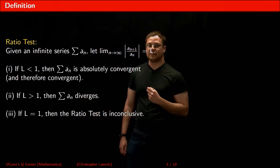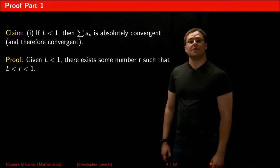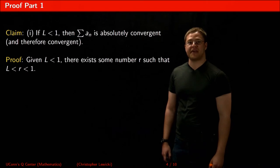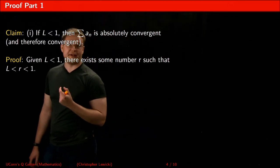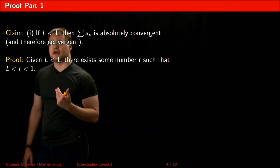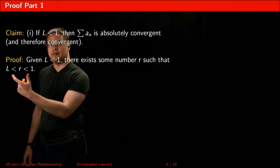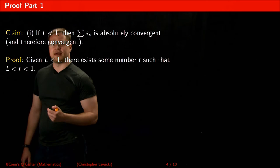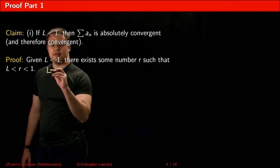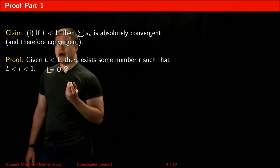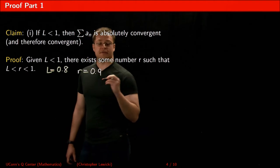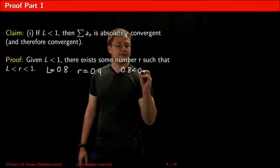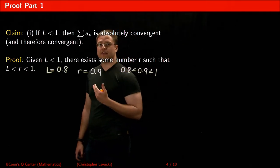Now let's look at why this definition is true. First, let's evaluate the claim that if L is less than 1, the series is absolutely convergent. Given that L is less than 1, there exists some number r such that we can sandwich r between L and 1, because numbers are infinite. For example, if L equals 0.8, we could choose r to be 0.9, because 0.9 is sandwiched between 0.8 and 1.